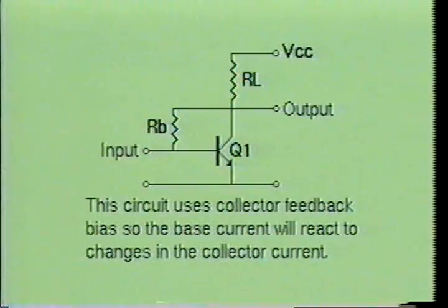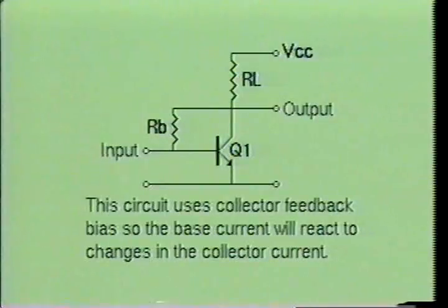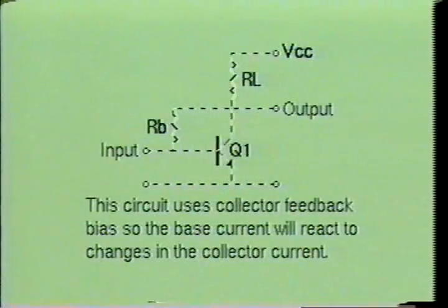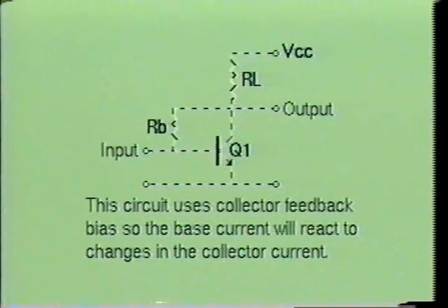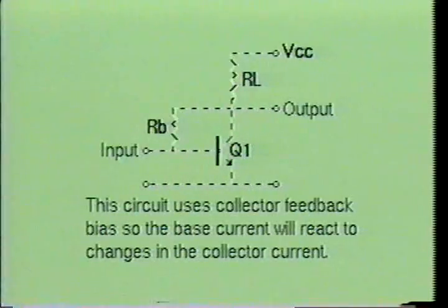The collector feedback bias arrangement will provide some improvement over the fixed bias circuit. This circuit uses collector feedback bias to allow the base current to react to changes in collector current. The base resistor is attached to the collector of the transistor rather than to VCC. If the collector current increases, the collector voltage will decrease, which will cause the voltage applied to the base to decrease, causing the transistor to conduct less current and stabilizing the circuit. However, since some of the circuit's AC output is fed back into the base during normal operation, it will reduce the gain of the amplifier. Even so, collector feedback bias is widely used because of its simplicity.